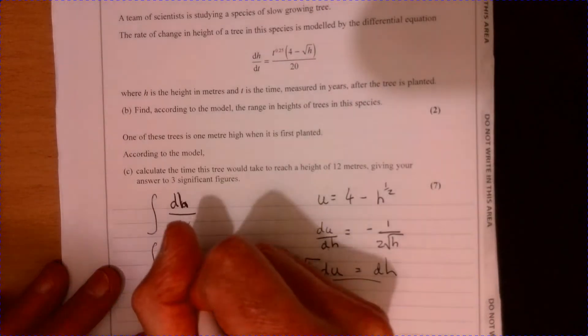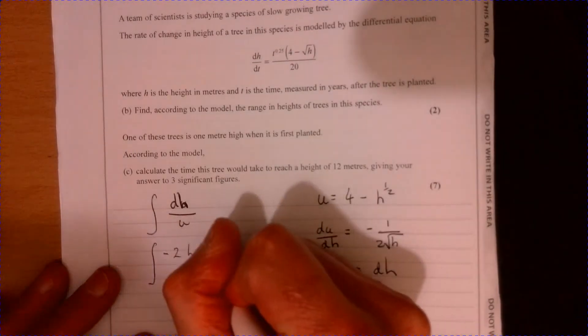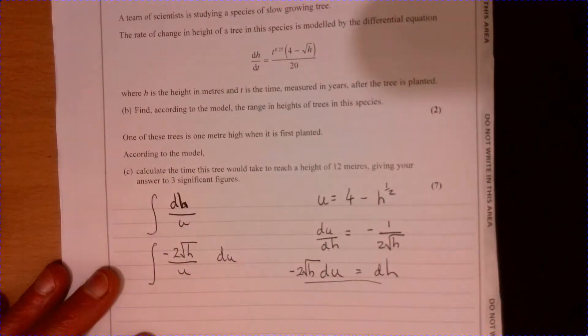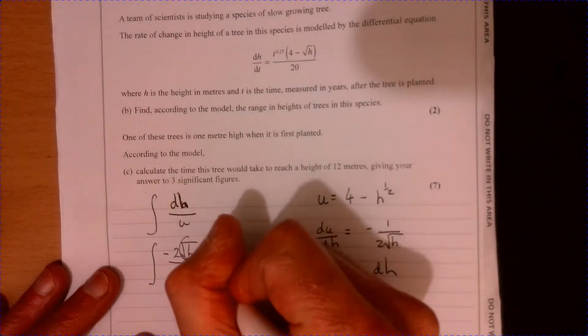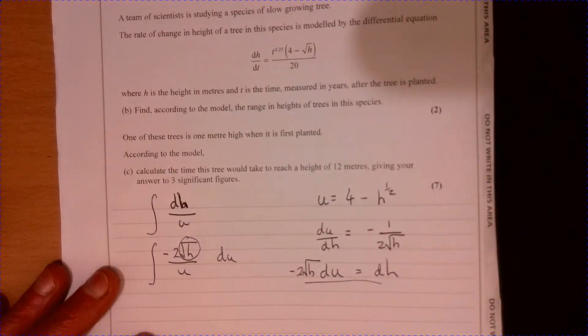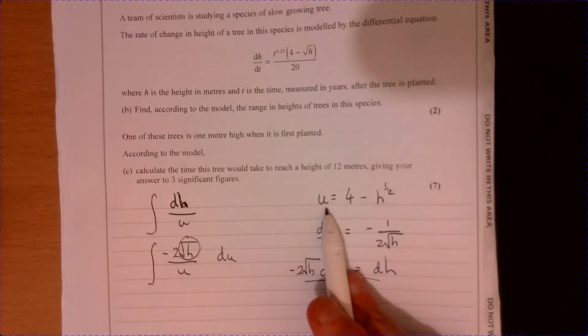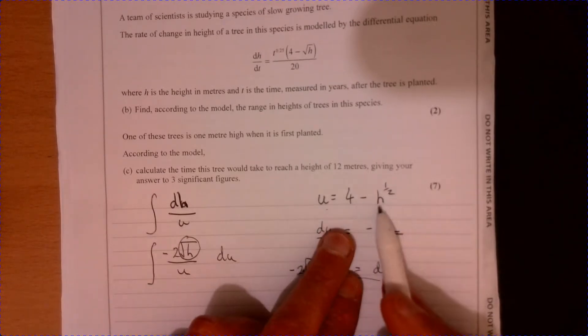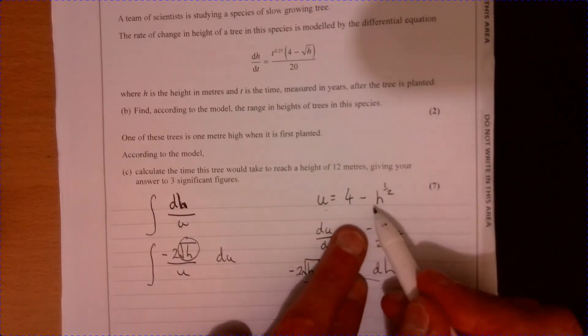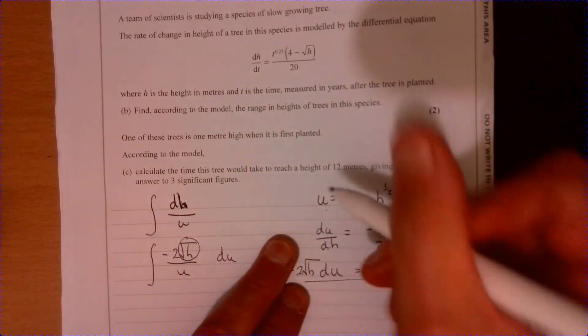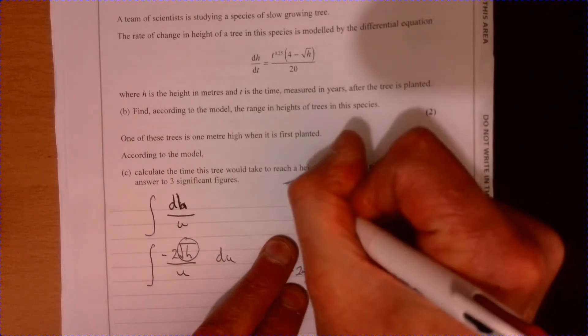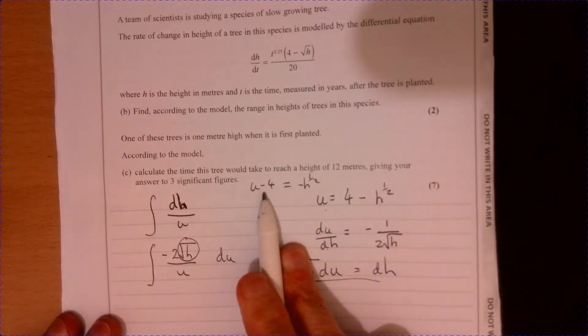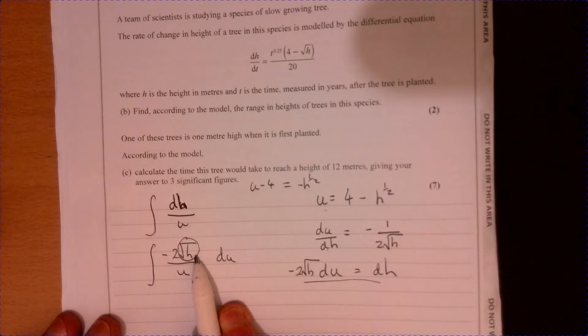Now let's take this and just substitute it back in and see where we've got to. It actually looks more complicated at the moment but we do have something involving du but the problem is this here up here. Let's go back over to here and think about what u is equal to. U is equal to 4 minus h to the half so if we just rearrange this I've got a minus there so I can also say u minus 4.